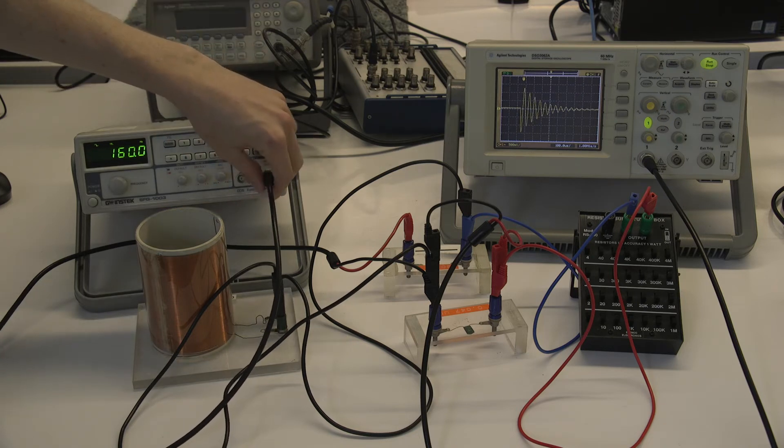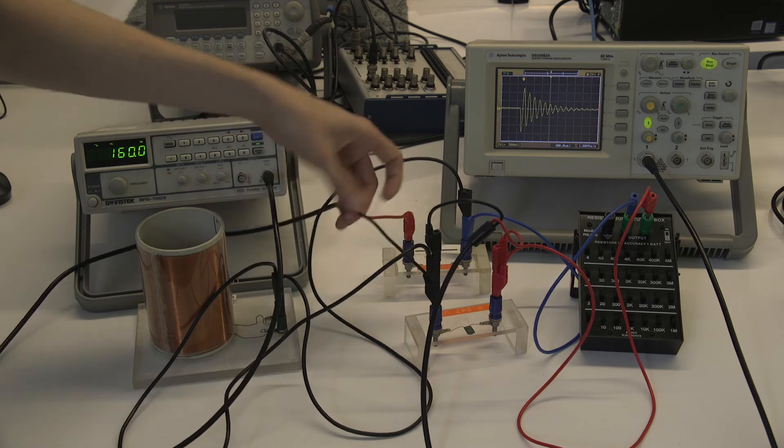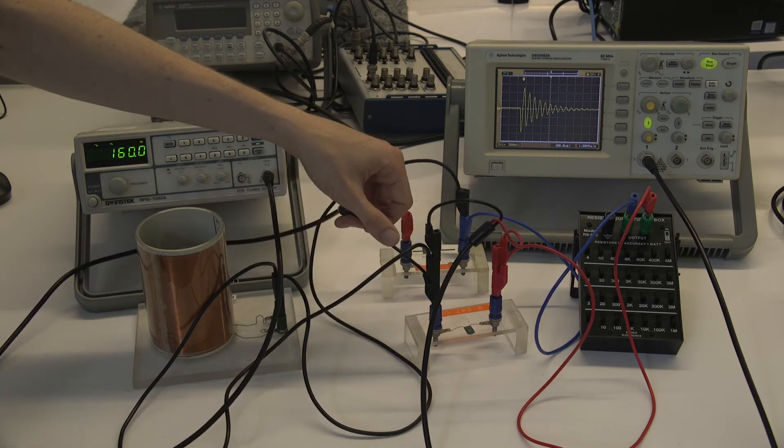So that's the output here. It's through a BNC connector. So the inner is where the signal comes out of, and the outer is the ground. And they're then connected to these red and black terminals that you can see over here.